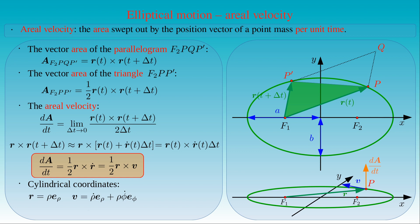Then the vector product of the position vector and the velocity is equal to rho times E_rho, multiplied by rho-dot times E_rho plus rho times phi-dot times E_phi. We can factor out the terms in the parenthesis, and the cross product of E_rho with itself vanishes. Since the cross product of E_rho and E_phi gives E_z, we obtain rho squared times phi-dot times E_z.